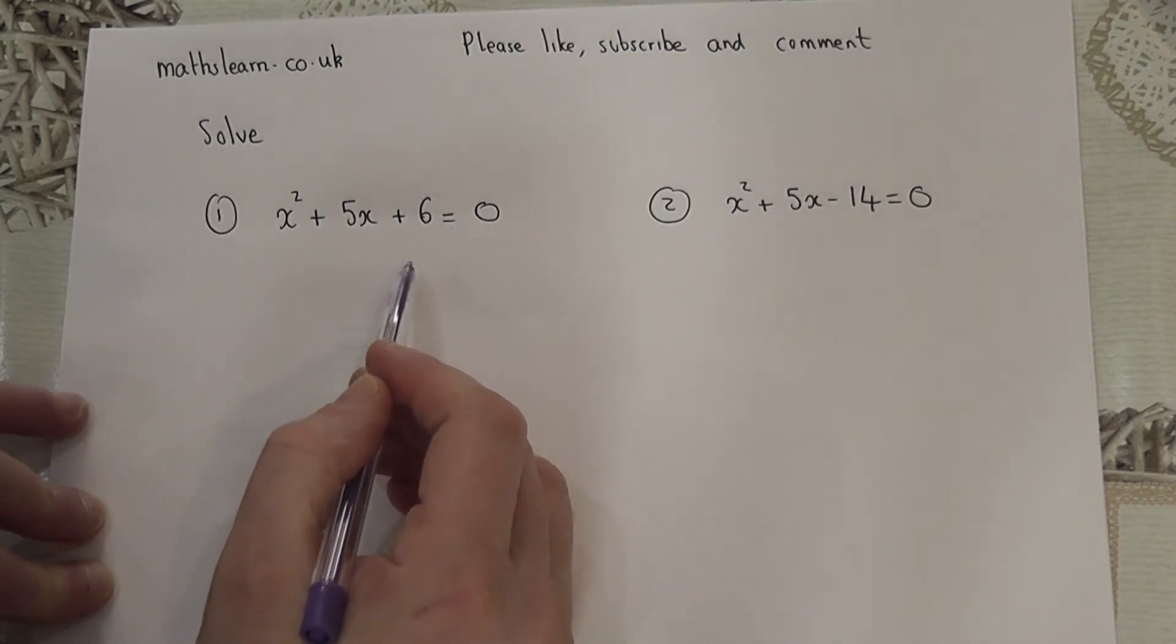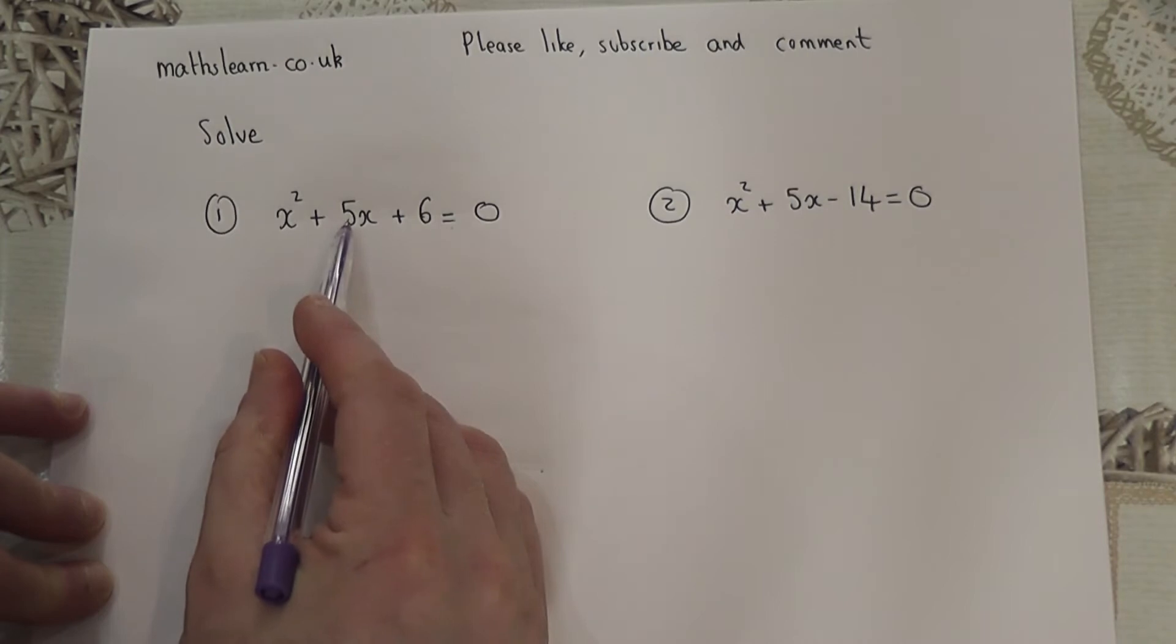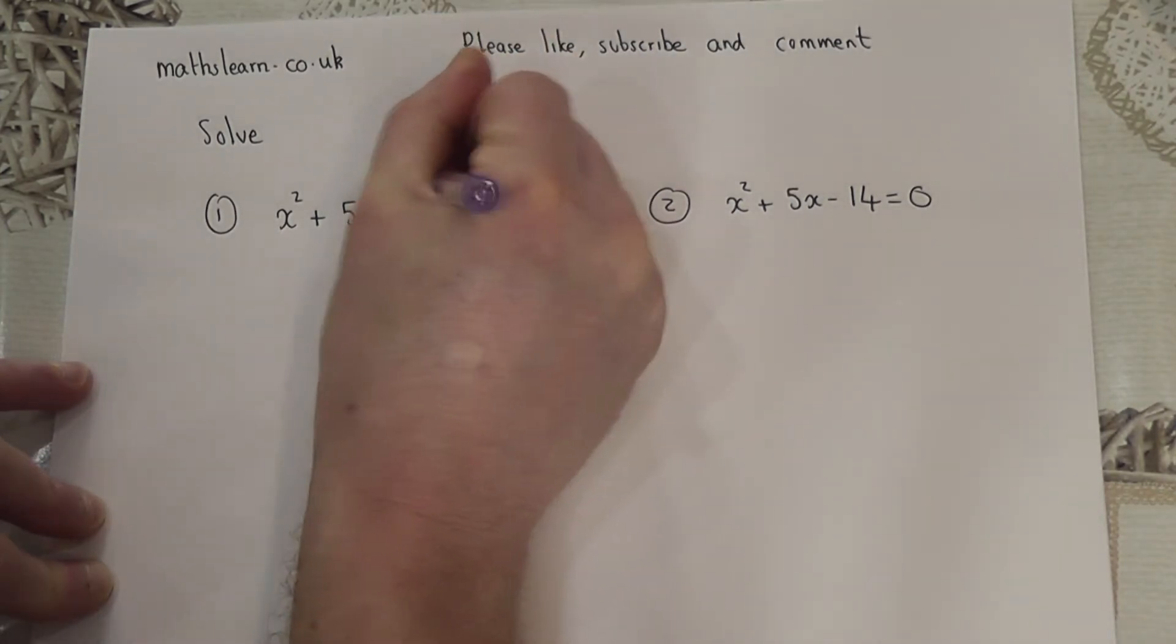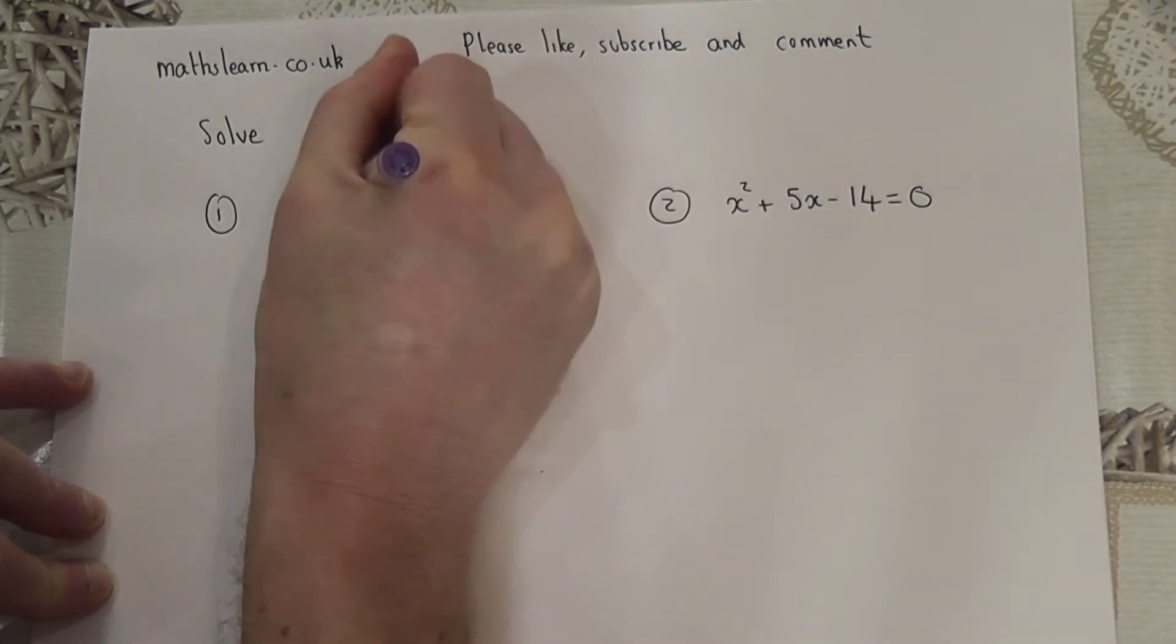I've got to find two numbers which multiply to make 6 and add to make 5. These are: 2 times 3 is 6, 2 plus 3 is 5.